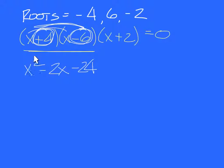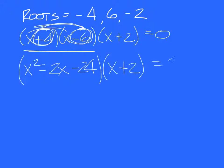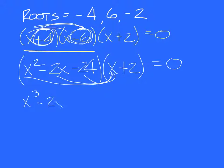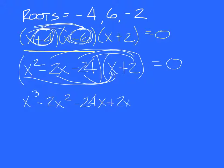So that will help you skip the step of having to simplify. It's x squared — add this term with this one, including the signs, to get minus 2x. And then multiply them to get minus 24. Now you have to multiply by x plus 2. Multiply the first quantity through by x, and you get x to the third minus 2x squared minus 24x.